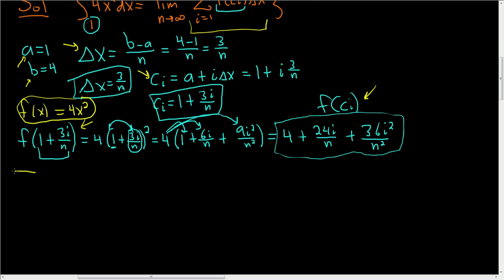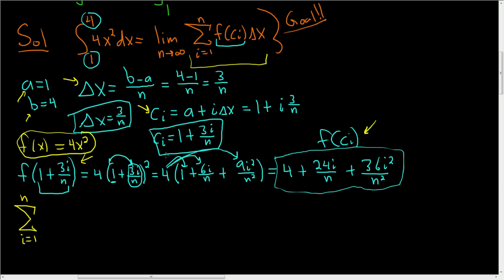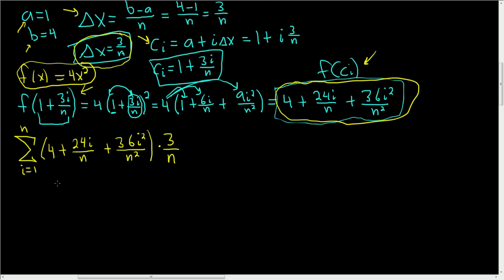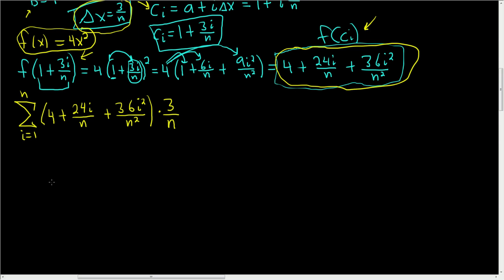So the sum as i runs from 1 to n, let me scroll up so you can see it first. We have to write down f of c sub i. So that's this. Let's go ahead and write it down. So this is 4 plus 24i over n plus 36i squared over n squared. And this is being multiplied by delta x. Well, delta x is here. Delta x is 3 over n. In this next step, I'm going to go really, really slow because I skip all of the work.